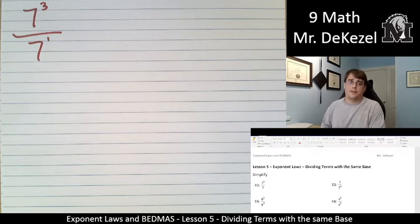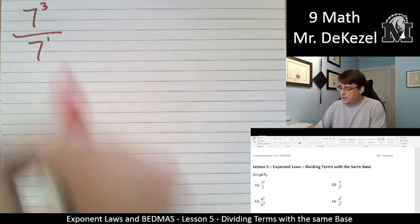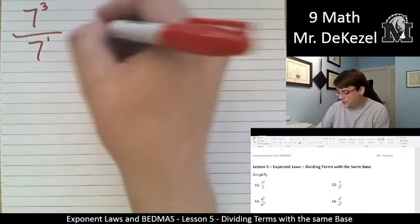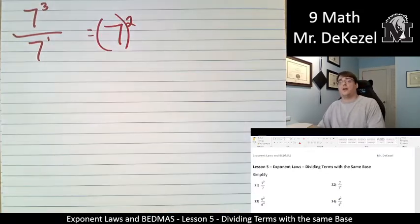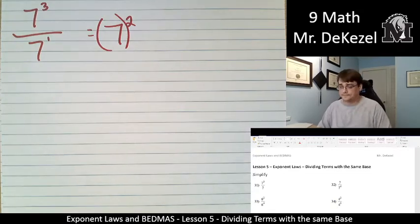When we are multiplying them, we added the exponents. So now when we're dividing them, we subtract them. 3 minus 1 is 2. So this is 7 to the power of 2. And again, we don't have to solve. We could. We just have to simplify, as these are going to sometimes be a little bit complicated.